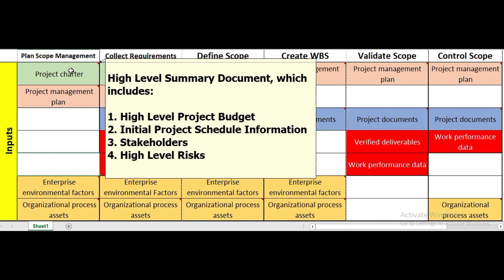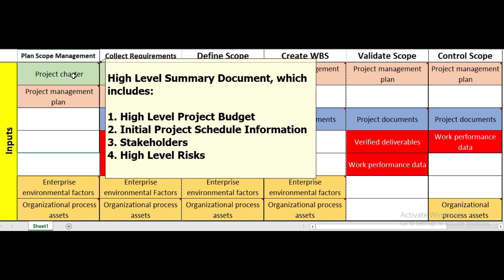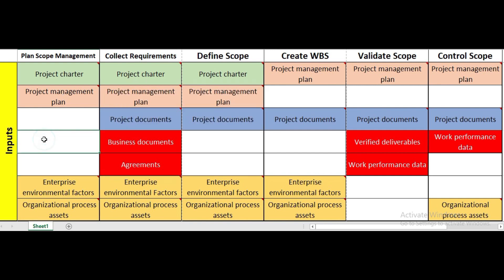The project charter includes high-level project budget, high-level information regarding the project schedule, high-level information regarding project stakeholders, and high-level risks. The project management plan defines how the project will be executed, monitored, controlled, and closed. This is a general input used across many different process areas.